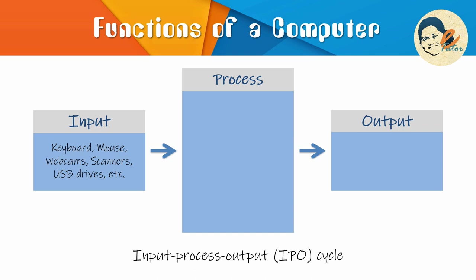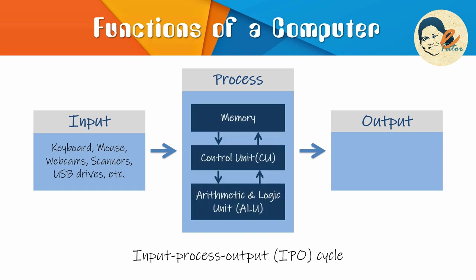Other common input devices are microphones, webcams, scanners, USB drives, etc. Next comes process. In this context, process is the execution of a set of instructions or operations on data. This is a totally internal functionality of the computer. Once the inputs are received, the computer starts processing the data.